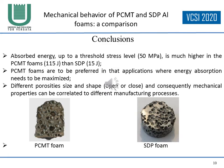In conclusion, absorbed energy up to a threshold stress level of 50 MPa is much higher in PCMT foams — 115 joules — than in the sintering and dissolution process foams — 15 joules. PCMT foams are to be preferred in applications where energy absorption needs to be maximized. Different porosities, size and shape, open or closed, and consequently mechanical properties can be correlated to different manufacturing processes.